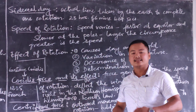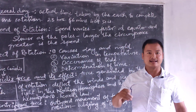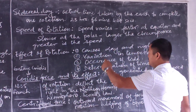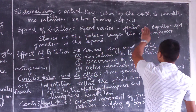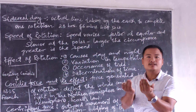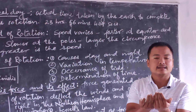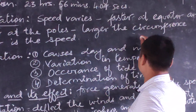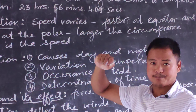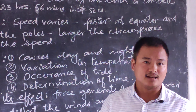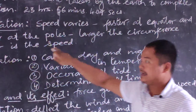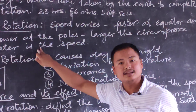The speed varies from lower latitudes to higher latitudes because at higher latitudes — that is, the poles — the circumference of the earth is less, while at the lower latitudes the circumference is very large. Therefore, the larger the circumference, the greater is the speed.